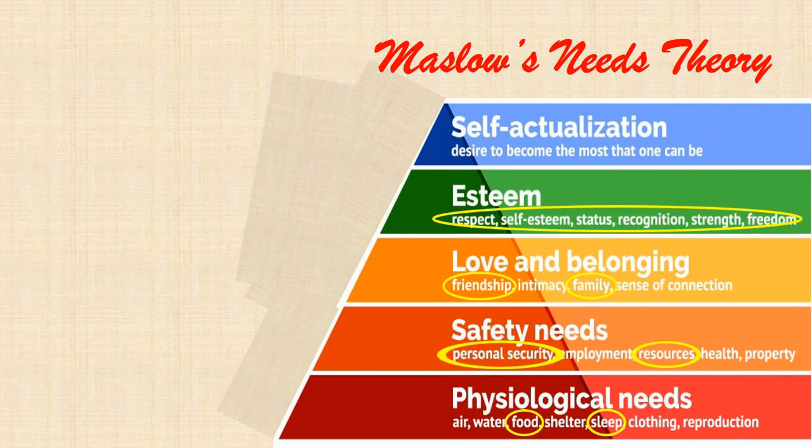The circled ones are directly related to PG life. Food, shelter, and sleep are the basic physiological needs. If your course and institution want to compromise these needs and you can withstand those challenges, then you can join that course. Personal security is another aspect to look for, especially if you are female. Resources will be mainly money, so you should look at the stipend you get.